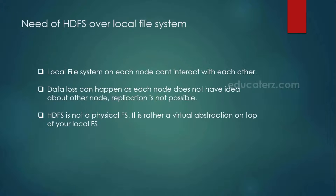What is the purpose of your Hadoop distributed file system when we are having the local file system? In terms of Windows, the local file system would be Windows NTFS. If it is Linux, you can see that there is a local file system. But what is the purpose of HDFS when we already have the local file system? Local file systems cannot interact with each other — they work independently. In case one machine goes down, the other machines do not even have that information, meaning there is a chance of losing your data. To avoid such problems and to give you a highly fault tolerant system, we have another layer on top of your local file system.